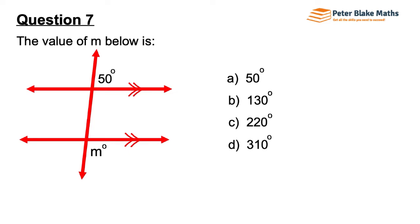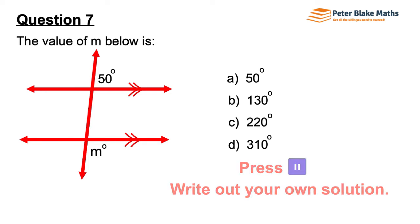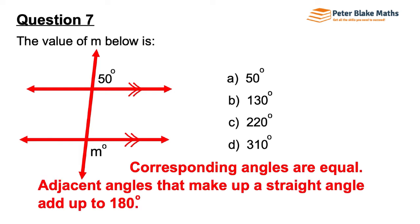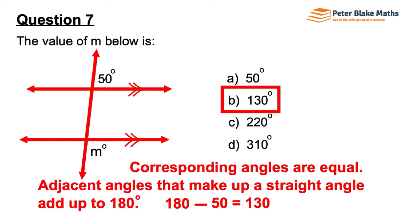Question 7. The value of M in the diagram below is 50 degrees, 130 degrees, 220 degrees, or 310 degrees. Corresponding angles are equal, and adjacent angles that make up a straight angle add up to 180 degrees — both rules we're going to use to find M. If we take 180 degrees and take 50 degrees away, we find 130 degrees for the angle just below the 50. That 130 degrees is then in corresponding position to M, so M equals 130 degrees.